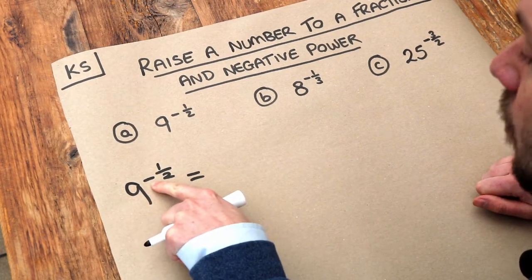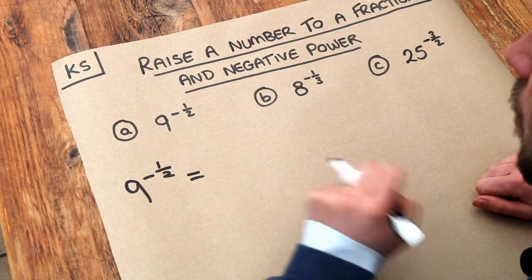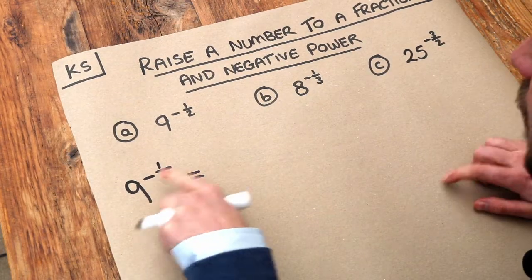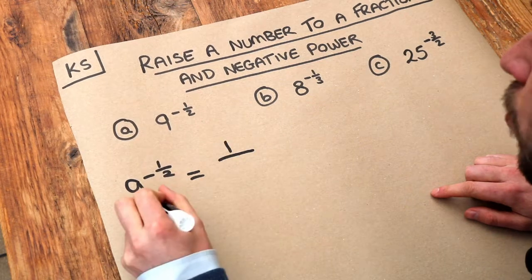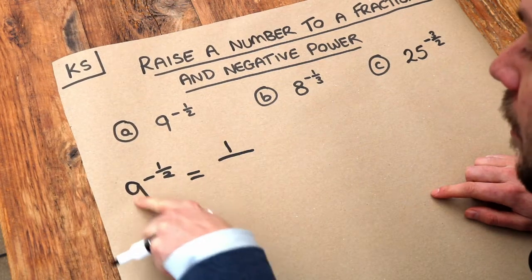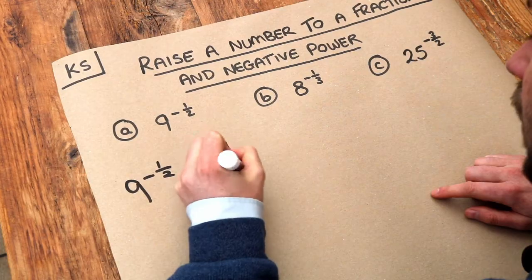I'm going to deal with the negative part of the power first. From a previous video we saw that if we have a negative power we just do 1 over it. So we're going to do 1 over, and then this same thing but without the negative. So 9 to the power of a half.